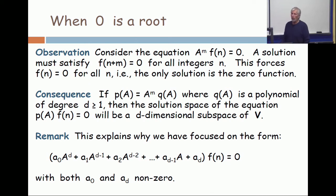And that is explaining why we're focusing on polynomials where the leading coefficient and the last coefficient are non-zero. If the leading coefficient is zero, you just decrease the size. If the last coefficient is zero, you factor out the extra powers of A and throw them away.